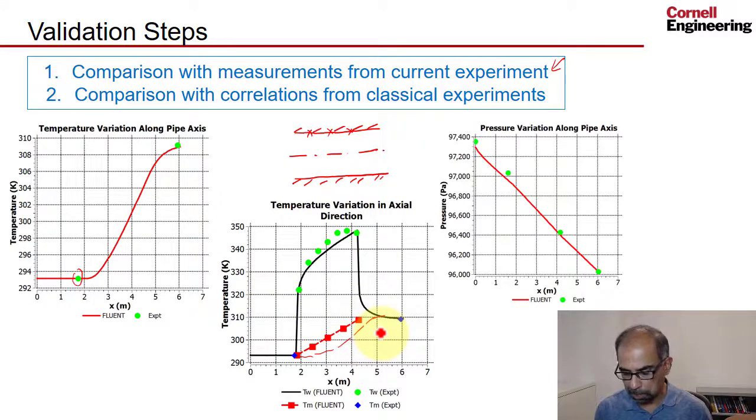And then one can also look at the pressure variation along the axis. So this is looking at the pressure. This has to match because we're taking the pressure over here that's measured and using that or the pressure over here and using that as a boundary condition. So again, that's a check on the boundary condition.